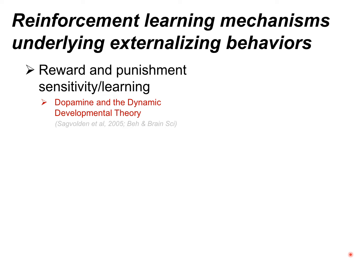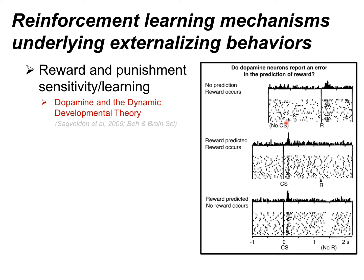One way to tackle these questions is through dynamic models that can give rise to behavior across time. A really good starting place is Sagvolden's Dynamic Developmental Theory, which proposes that hypofunctioning dopamine in the brain leads to the behaviors characteristic of externalizing psychopathology and ADHD in particular. This is based on a history of work going back to Wolfram Schultz's work in macaque monkeys in 1997.